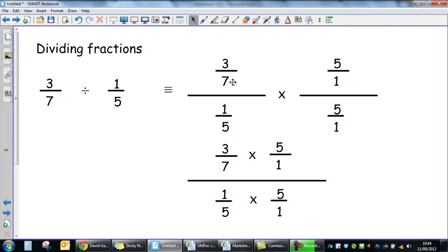Doing that top fraction, 3 sevenths over 1 fifth multiplied by 5 over 1 divided by 5 over 1 gives this ultra big fraction. But a lot of this will simplify.